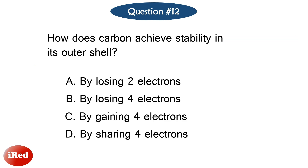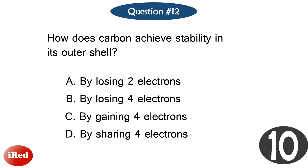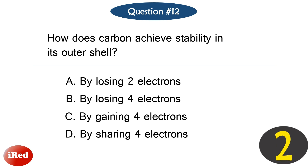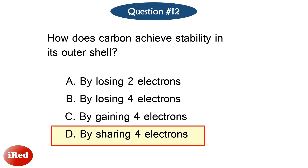Question number 12: How does carbon achieve stability in its outer shell? The correct answer is letter D, by sharing four electrons.